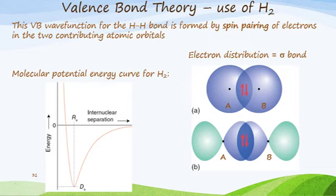This VB wave function is formed by spin pairing of electrons in the two contributing atomic orbitals. We bring the two atoms together—atom A and atom B—each with one electron. In the common space they share, we get these two spin unpaired electrons. If we had a p orbital, we could put the two electrons into a p orbital with this dumbbell shape that you've seen here.